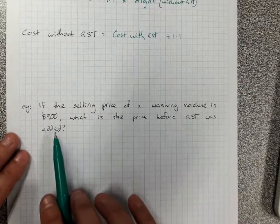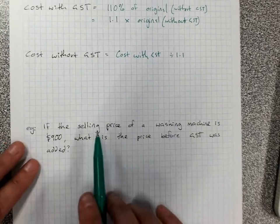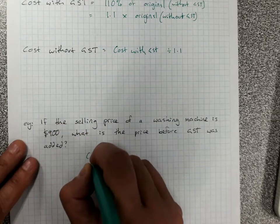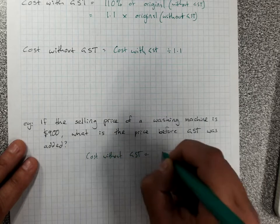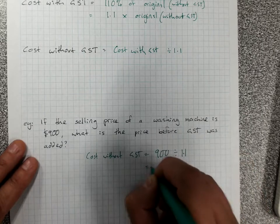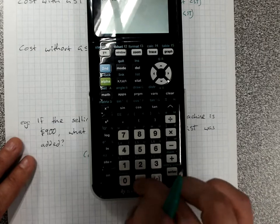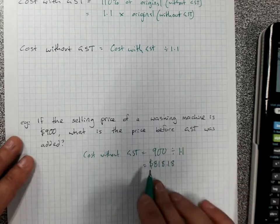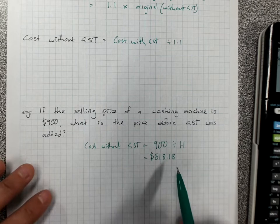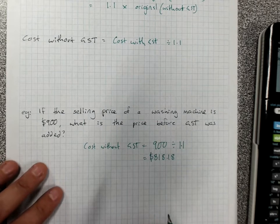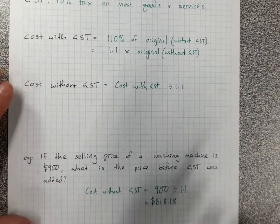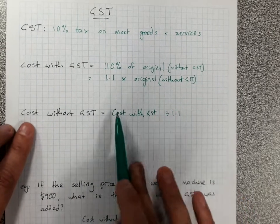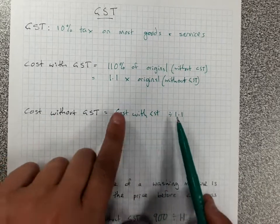So if the selling price of a washing machine is $900, what's the price before GST was added? So I want to find the cost without GST, which is the cost with GST divided by 1.1. So it was $818.18 before GST. If you wanted to work out the GST amount, then you could subtract that from your original price. There's a lot of different options of ways to tackle GST. It's a 10% increase, you can work with that. Just remember though, to get cost before GST was added, divide by 1.1.